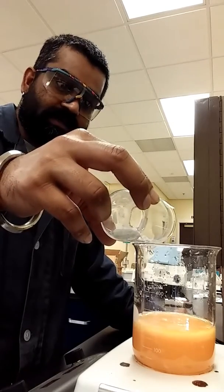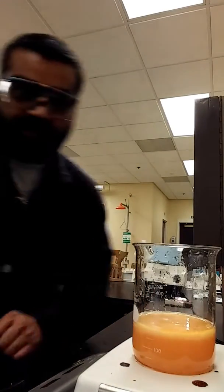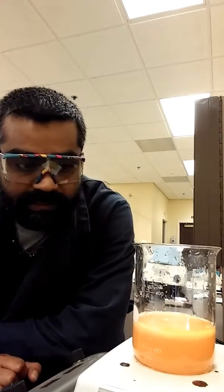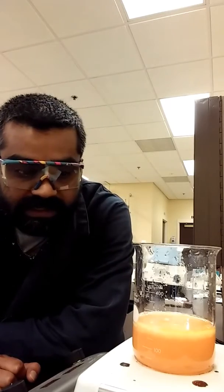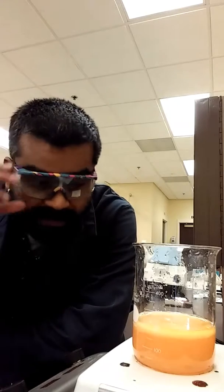You see it? Right away. You notice? You see a milky white substance forming inside that orange liquid. That's the precipitate of calcium citrate.